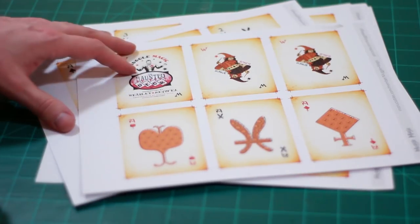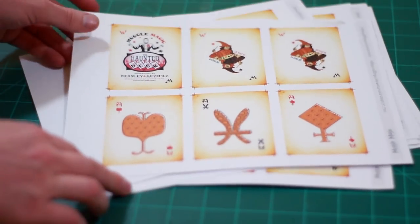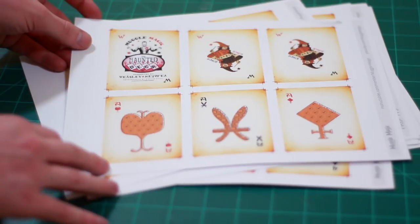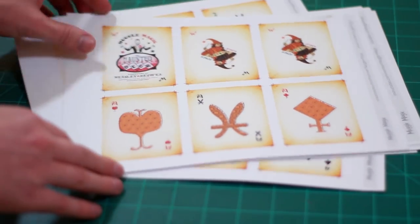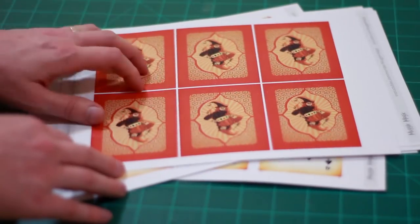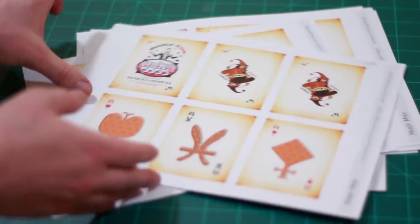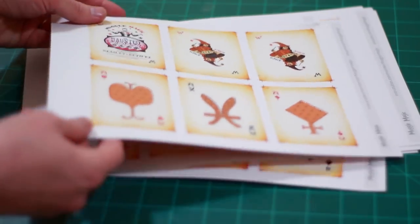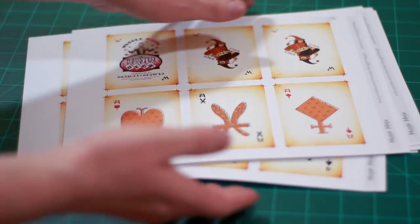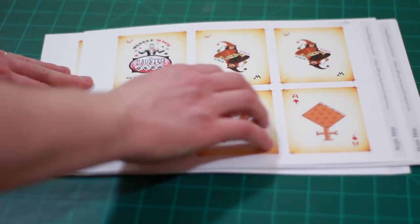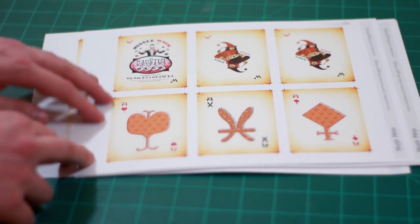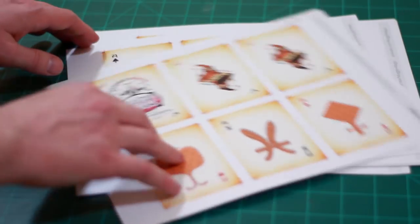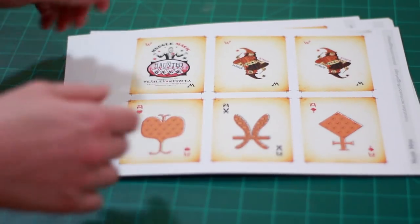So the first thing you want to do is download and print the templates. These are free on Instructables.com. This should be a 10-page, actually a 20-page PDF because each page has a back to it. So you want to print these out double-sided on a thick cardstock. I got a 110-pound cardstock, and you want to make sure that it's smooth too. You don't want a rough or textured cardstock because you want the cards to be able to slide around on top of each other like a normal deck of cards would.